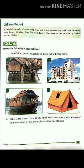Now let's try question two: Answer the following in your notebook. Identify the types of houses shown below and write their names. For Part A, see the picture carefully — the house is supported by wooden poles called stilts. So it is a stilt house.